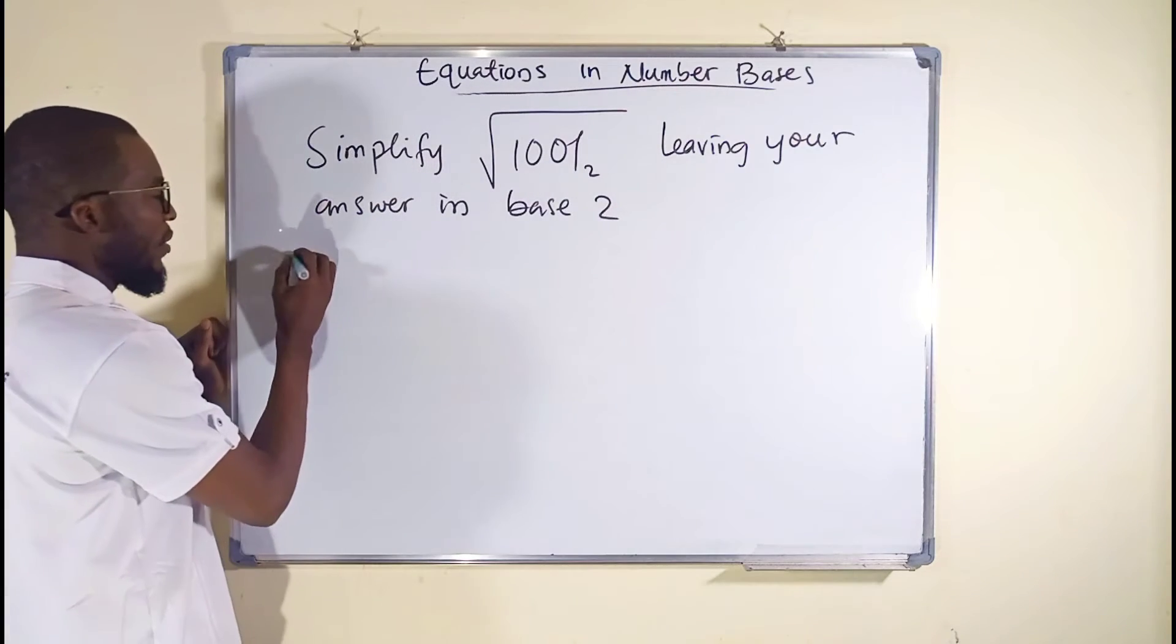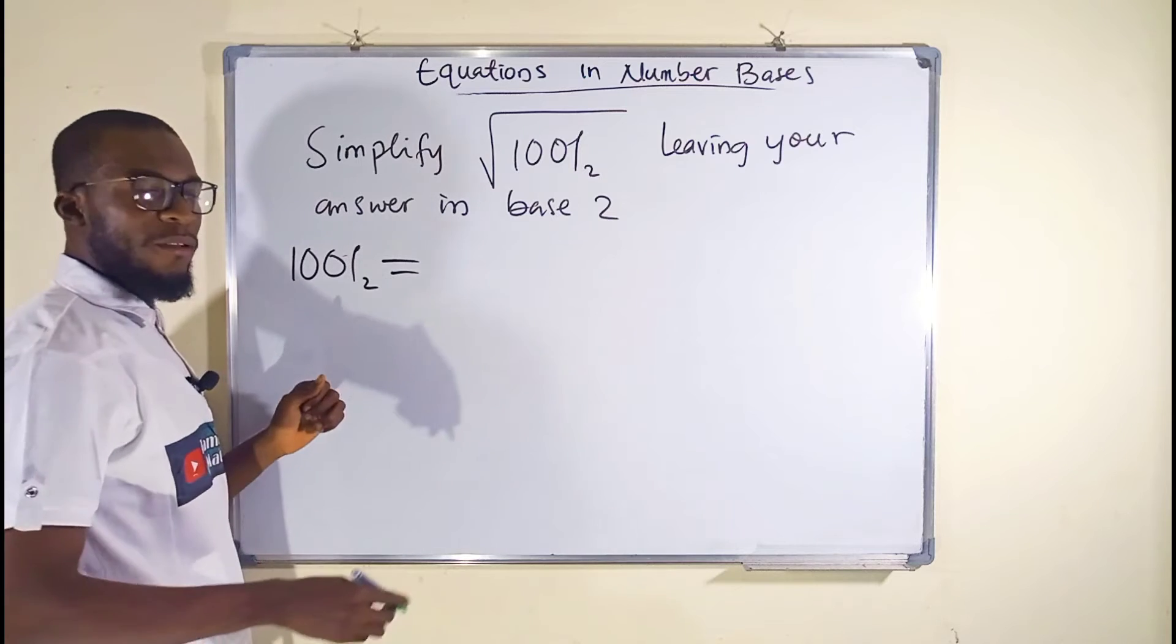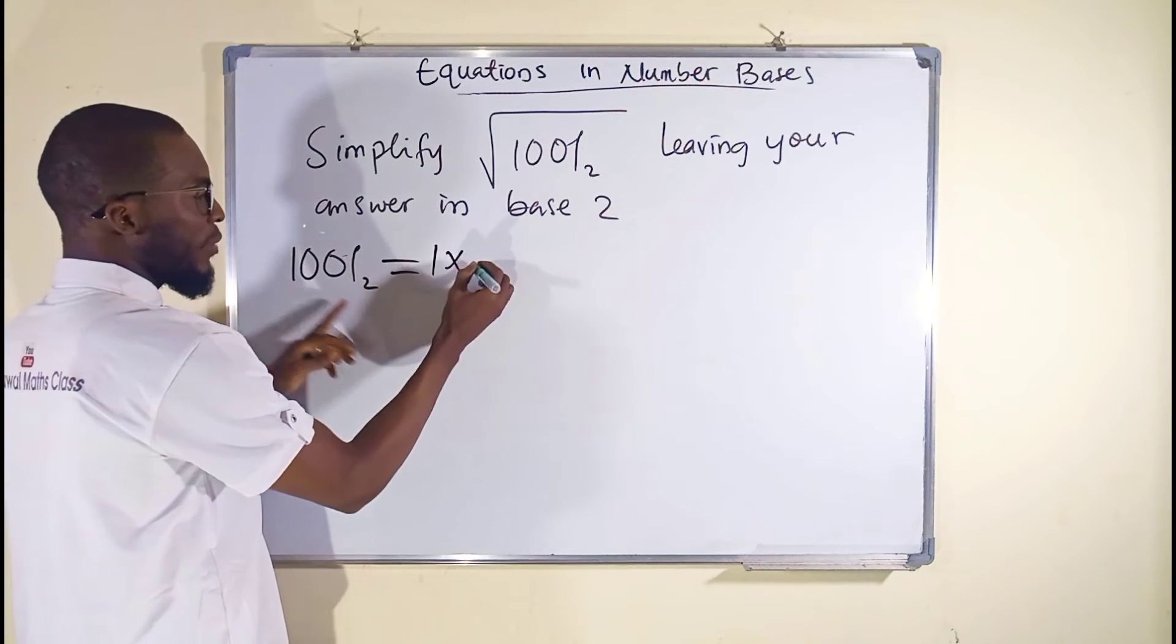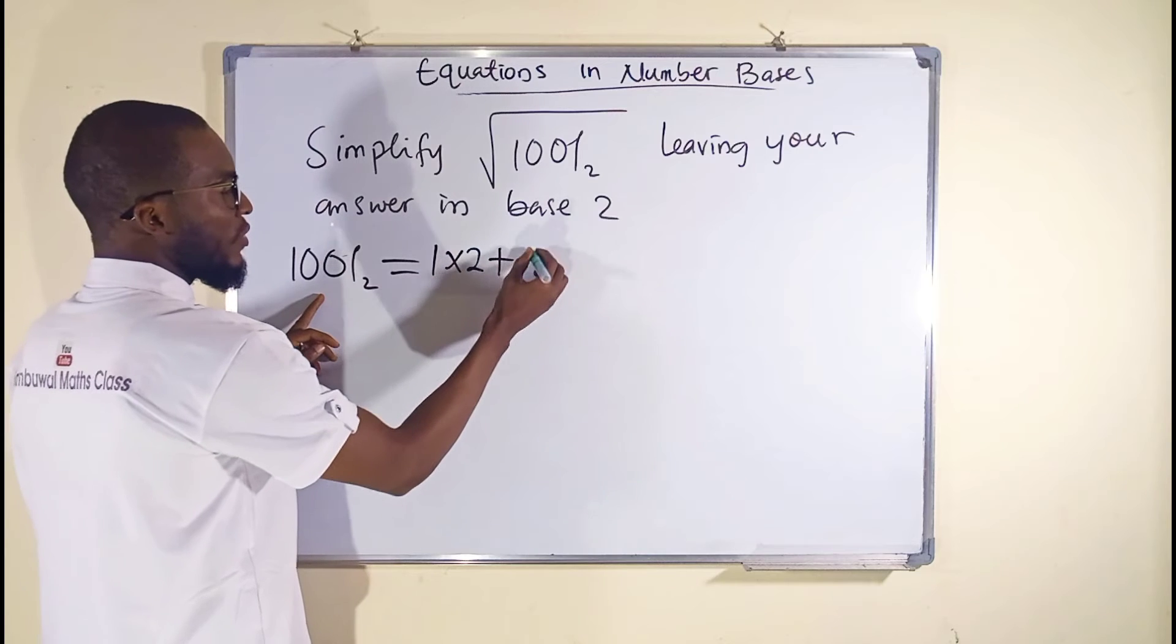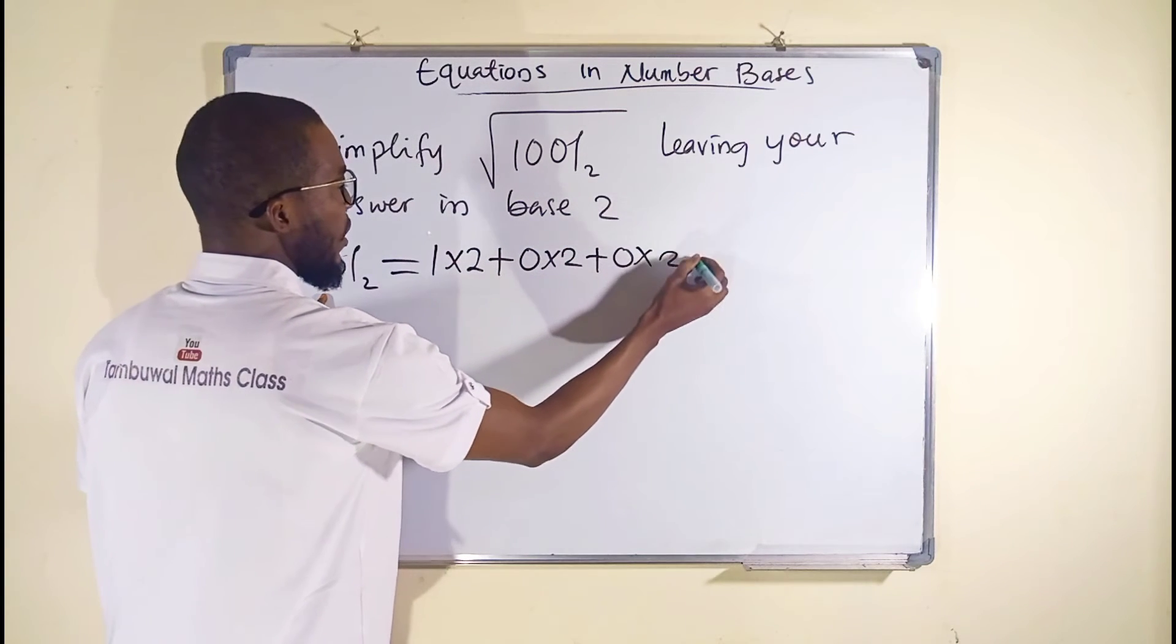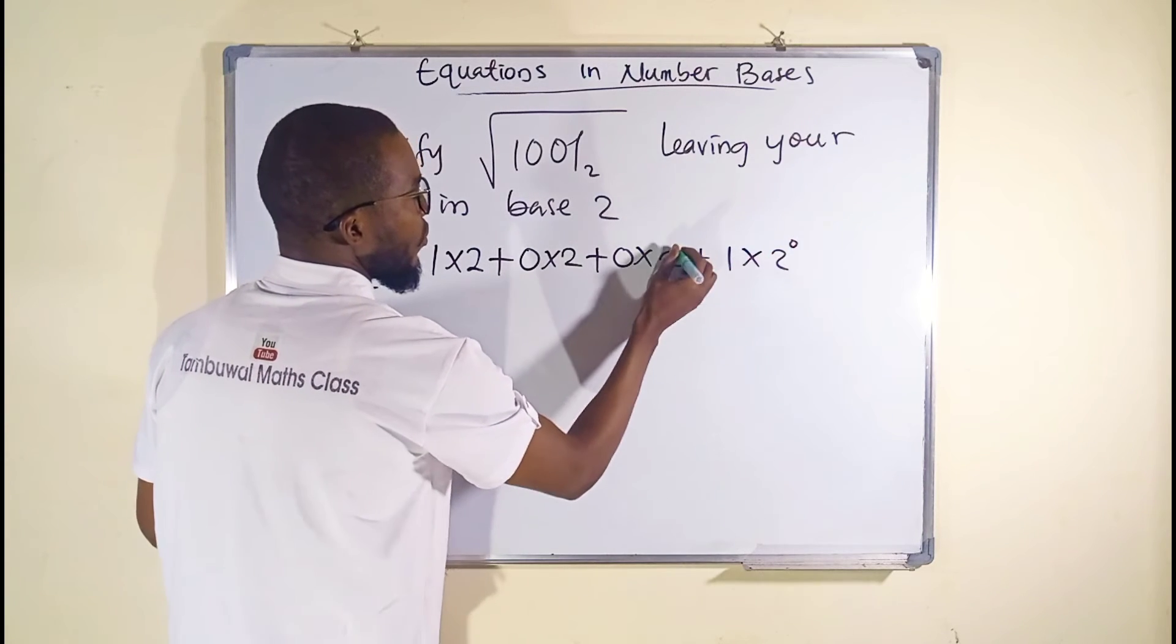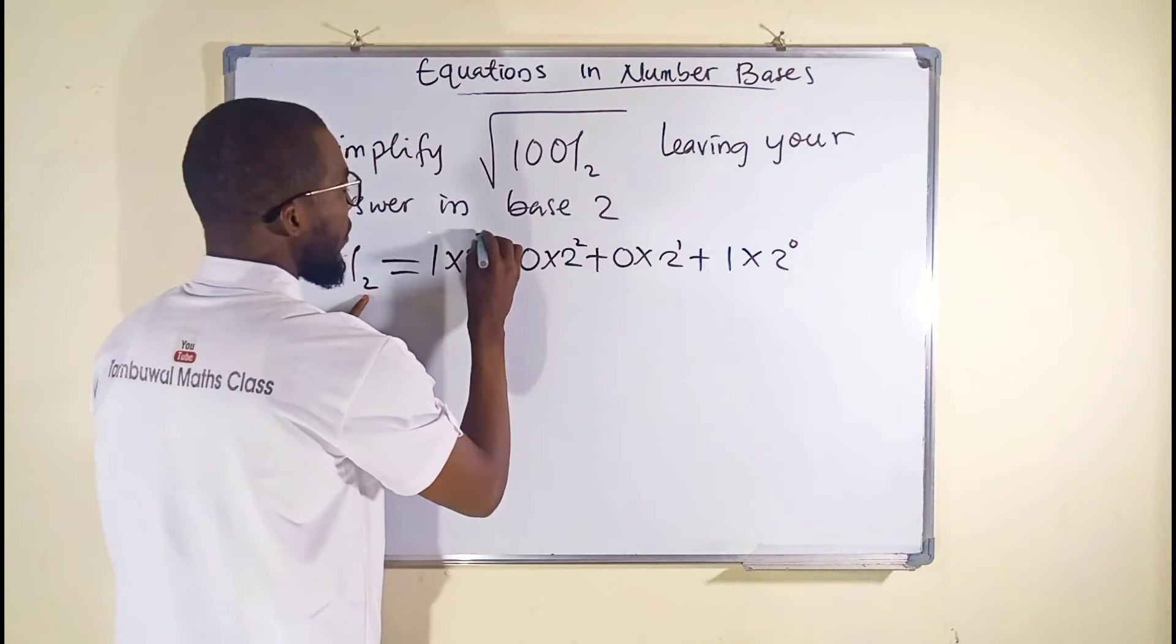Let us do that. We have 1001 in base 2. We want to change it to base 10. We take the first digit 1, we multiply by the base 2, plus 0 times 2, plus 0 times 2, plus the last one, 1 times 2. That's 0, 1, 2, 3.